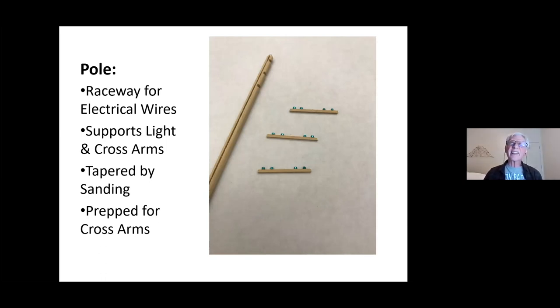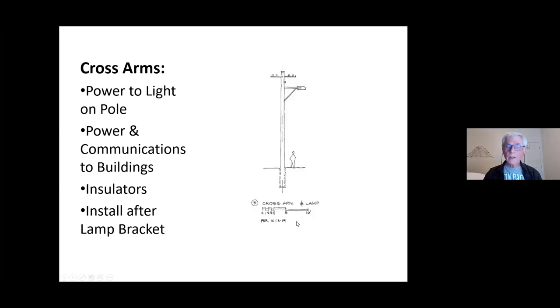And then you need to prep it for the cross arms, which is of course what these notches are here. And that's just done with the table saw, just draw some lines the appropriate width across there and run it back and forth across the saw.